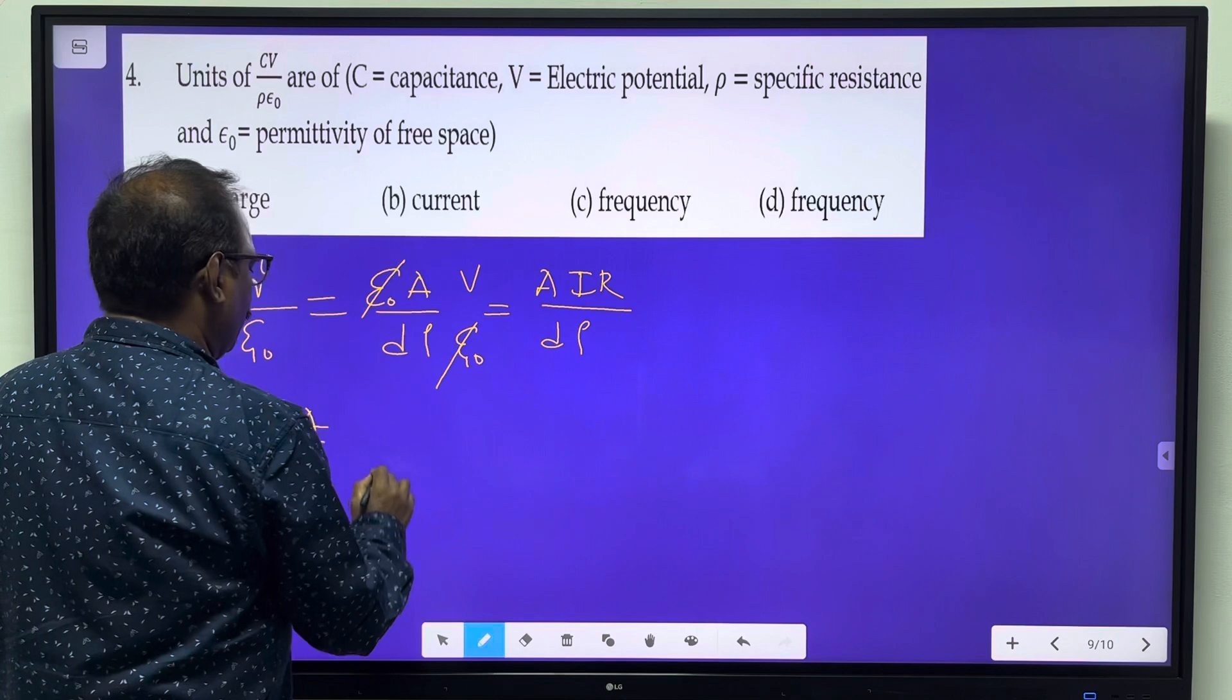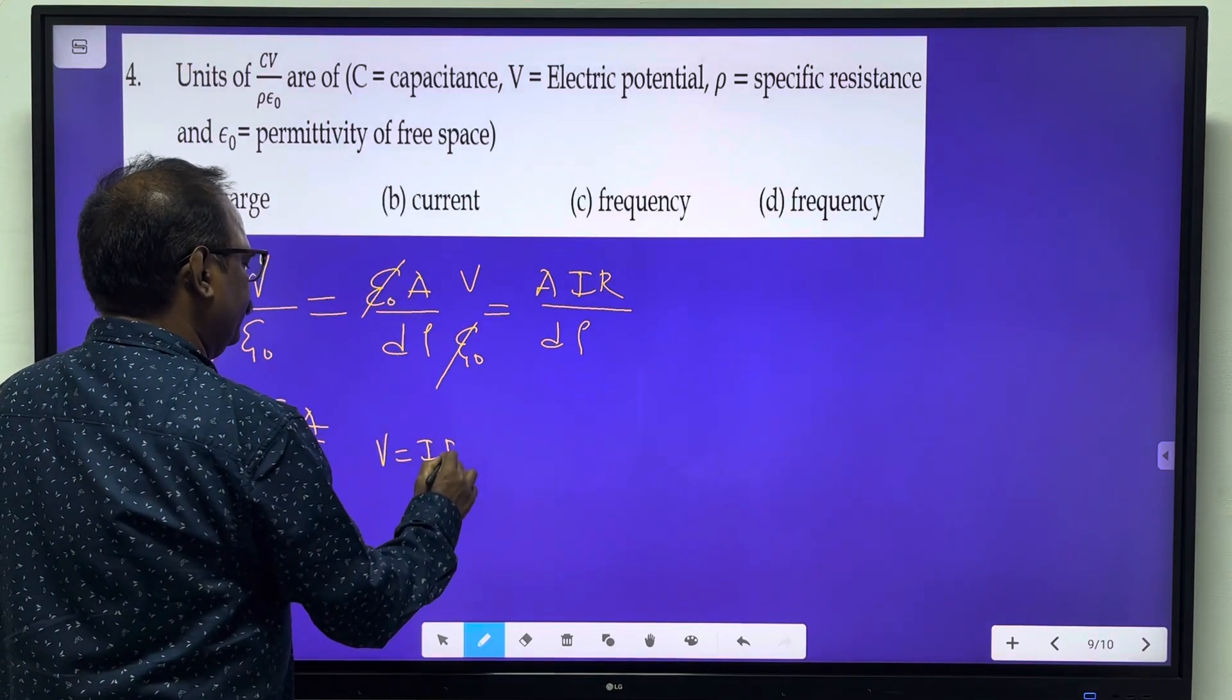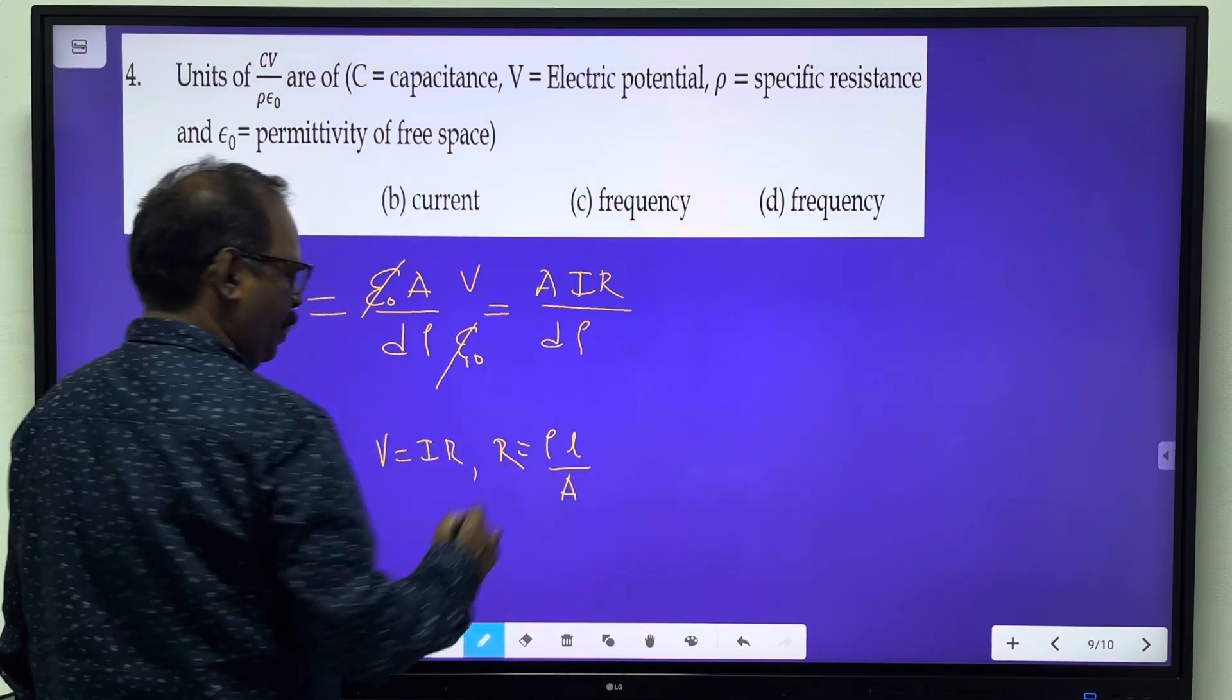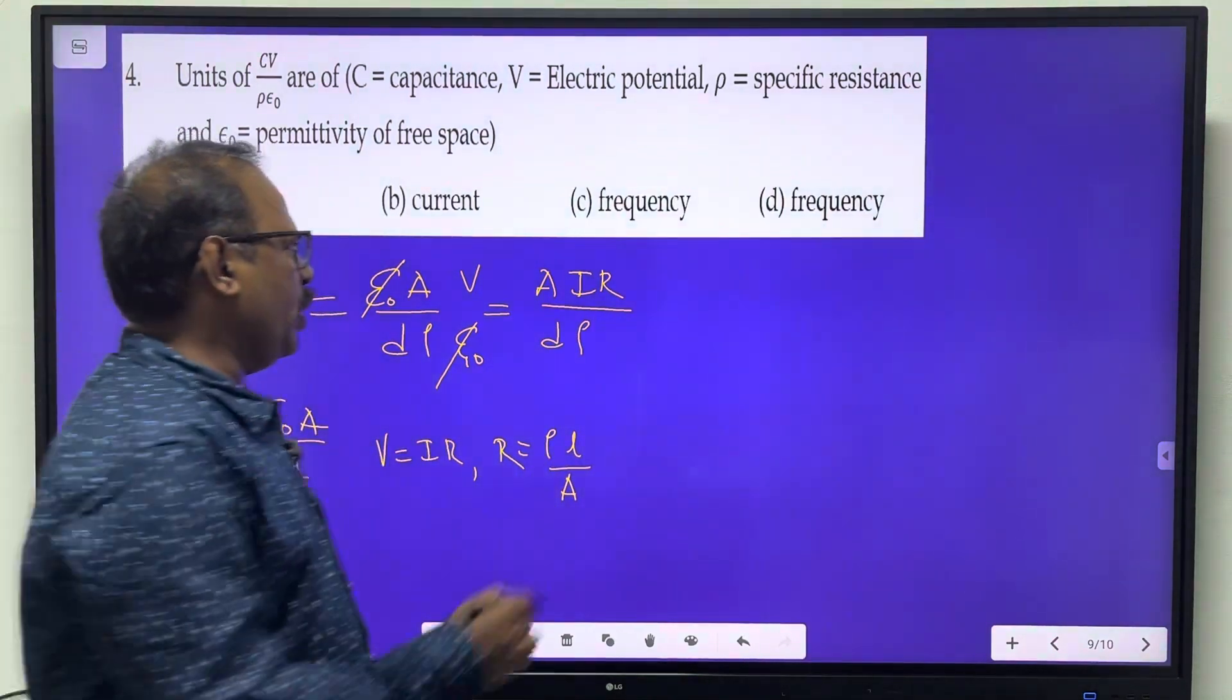From Ohm's law, V = IR. Resistance of a wire is R = ρL/A.